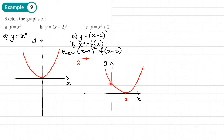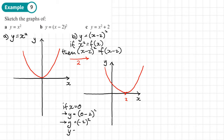To find where the graph crosses the y-axis, we set x equal to 0. So y equals (0 minus 2) squared, which is negative 2 all squared, giving y equals 4. So the y-intercept coordinate is (0, 4), and we should always mark in where the graph crosses the axes.